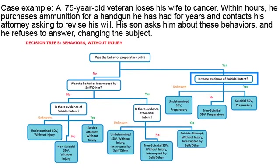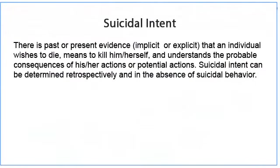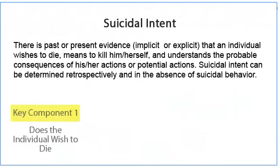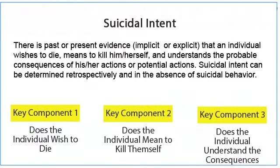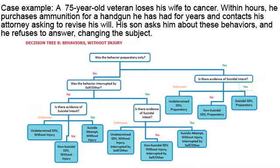Is there evidence of suicidal intent? Again, suicidal intent requires past or present evidence, explicit or implicit — and the implicit means that clinical judgment does count in these decisions. If a clinician believes there's enough evidence to suggest intent is present, it is okay to code suicidal intent as being present. There's past or present evidence that an individual wishes to die, means to kill him or herself, and understands the probable consequences of his or her actions. In this case, it would be appropriate for a clinician to use their clinical judgment and decide there was enough implicit evidence to code this as suicidal self-directed violence preparatory.